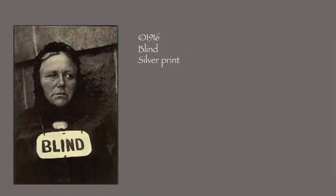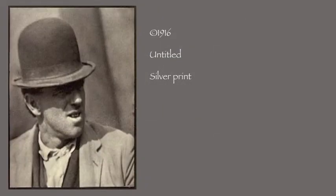When Paul Strand took his portraits, he often used a method to distract them. Due to this, he would have a shiny brass lens to make it look like he wasn't focusing directly on them.